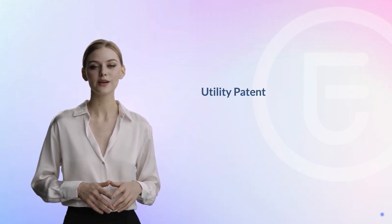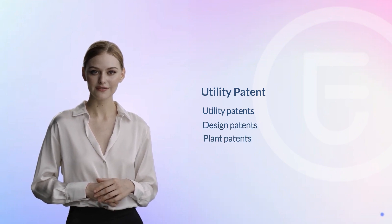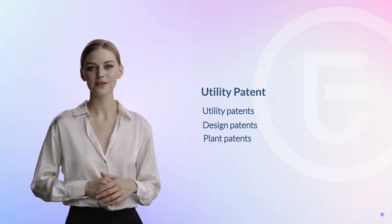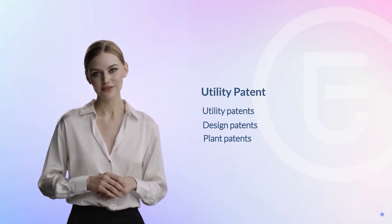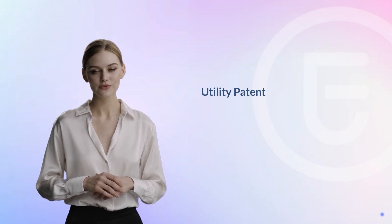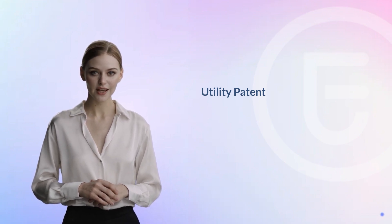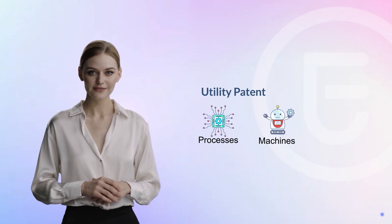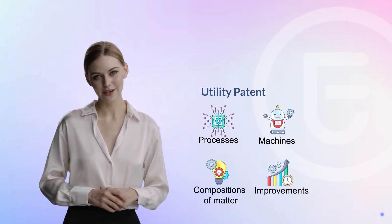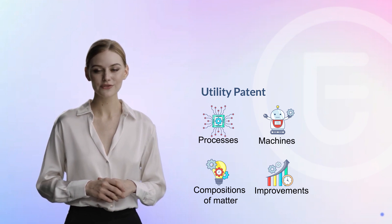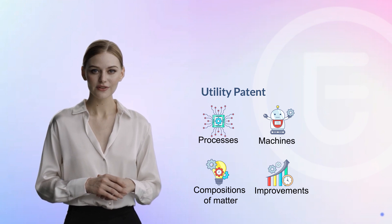There are three types of patents—utility patents, design patents, and plant patents. Among these, utility patents and design patents are the most common in dropshipping and the e-commerce industry. A utility patent protects the functionality of a new and useful invention, including processes, machines, compositions of matter, or improvements to any of these. In the United States, a utility patent can last for 20 years, although the duration can vary in different countries.